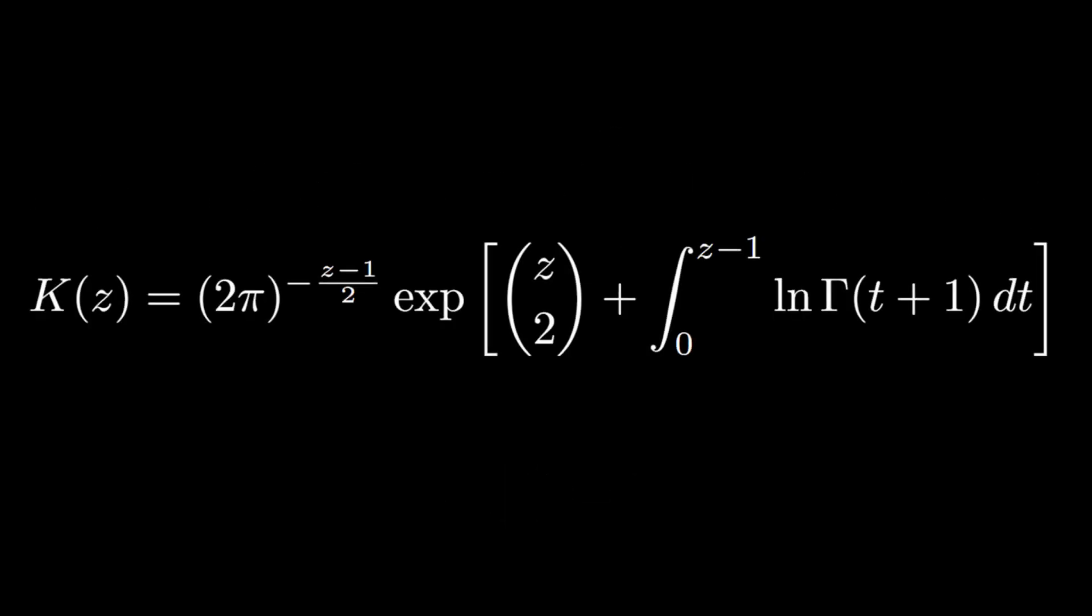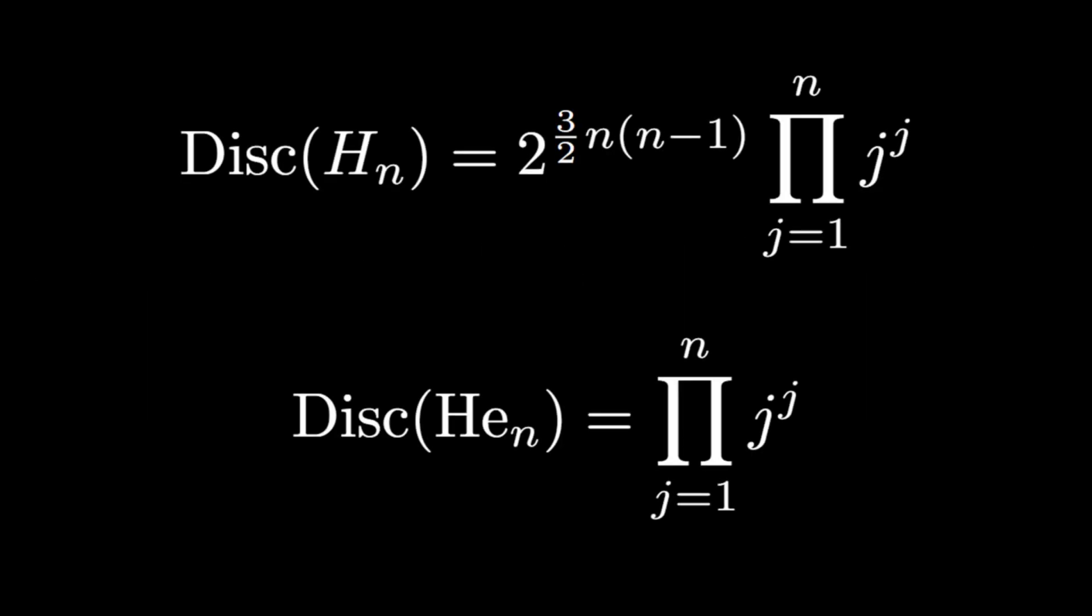The hyperfactorial can also be continuously interpolated using the k function, which we see here written in terms of the gamma function. The most common use of hyperfactorials is computing the sequence of discriminants of Hermite polynomials and their probabilistic form.